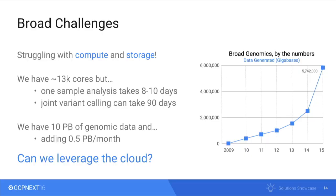We are the largest single producer of genomic data — we produce upwards of 10% of the world's genomic data output. But with that comes challenges: we struggle with compute and storage. We have 13,000 cores on-prem, but analyzing a single human genome sample can take 8 to 10 days. Doing an exercise where we look across thousands of samples can take upwards of 90 days. We have 10 petabytes in-house and are adding half a petabyte a month.